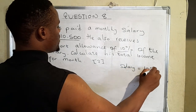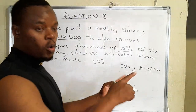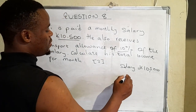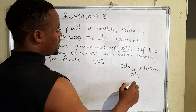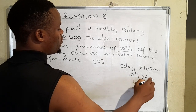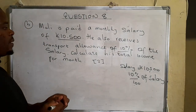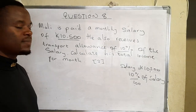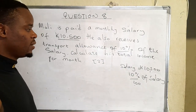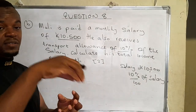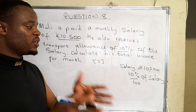The salary is equal to ten thousand five hundred. Then ten percent of this — take note that the word 'of' means multiplication. Ten percent, and every percentage is out of one hundred, so ten percent is ten out of one hundred of the salary. That is the transport allowance. We find ten percent of the salary and then add that amount to the salary to get the total income.